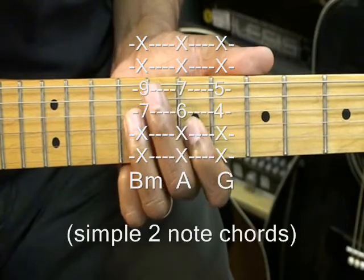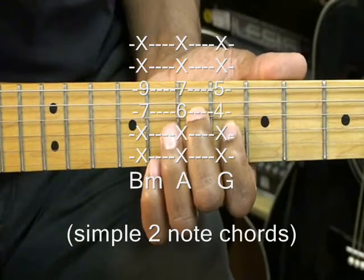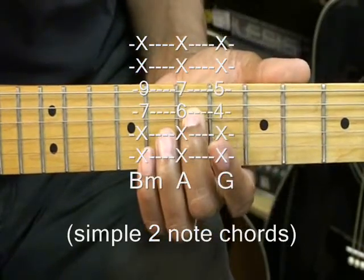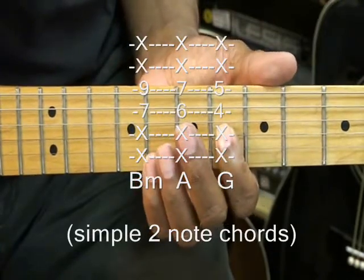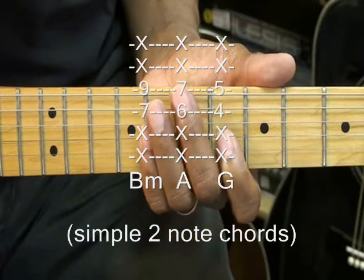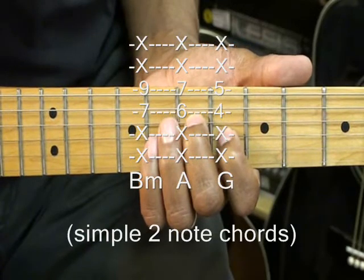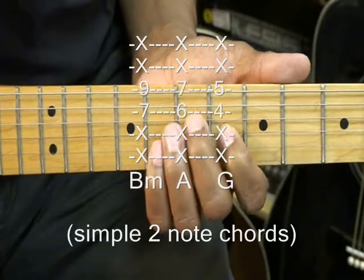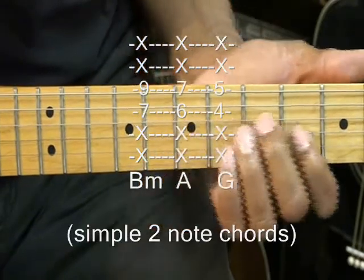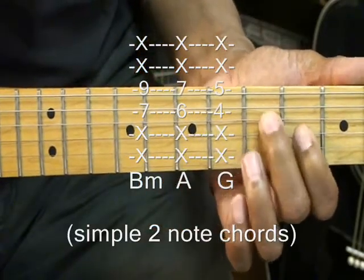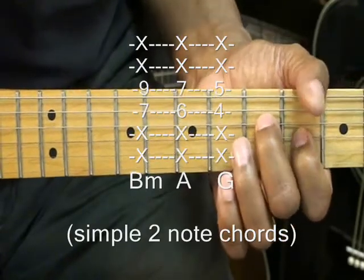Now we're going to do a simple A chord which is A C sharp. Right there. So we've got the A right there, 7th fret on the D string, and C sharp, and that's on the G string at the 6th fret. That's an A chord or a simple A chord. One and three. We're going to move that down a whole step to a simple G chord which is G and B, G and its 3rd.